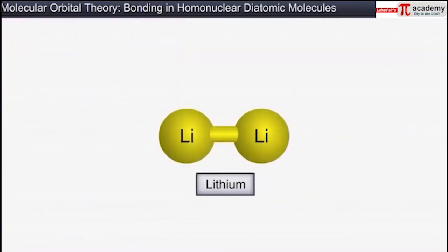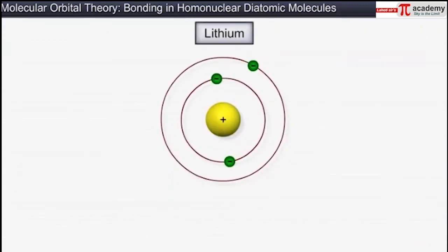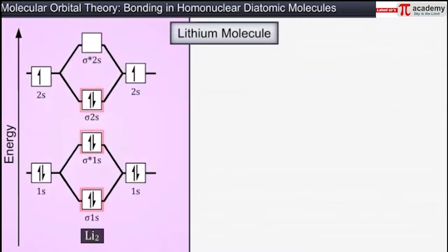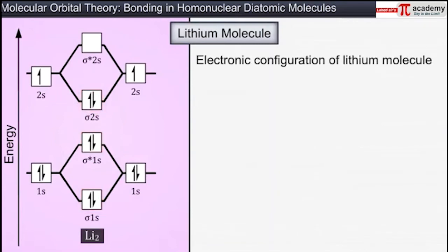Now let's see the bonding in a lithium molecule. A lithium atom has an electronic configuration of 1s² 2s¹. Thus there are six electrons in a lithium molecule.